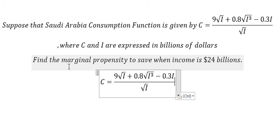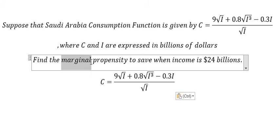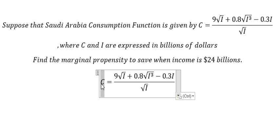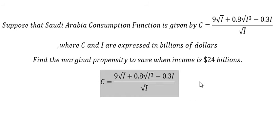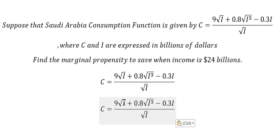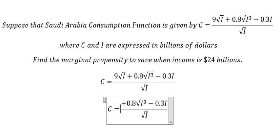So if we want to find the marginal propensity, we need to find the first derivative of C. Before we calculate this, we need to divide this one by this one. Because they have the same, you got number one, so that means we have number nine in here.